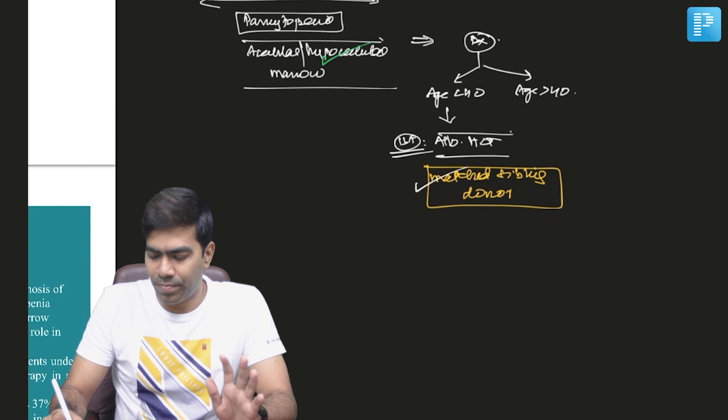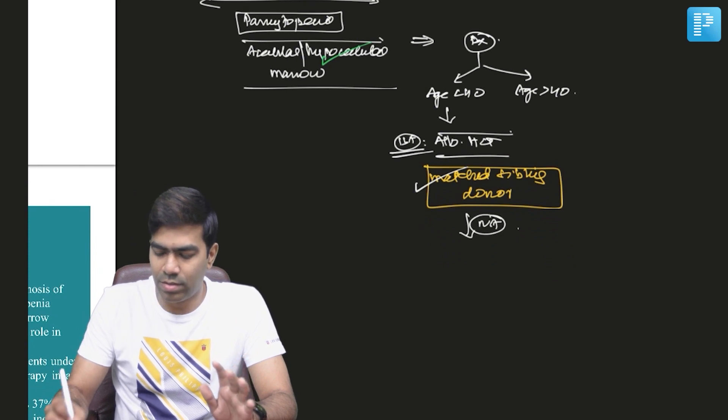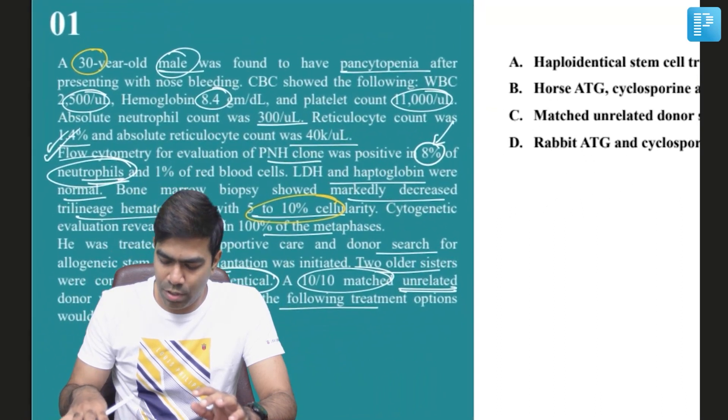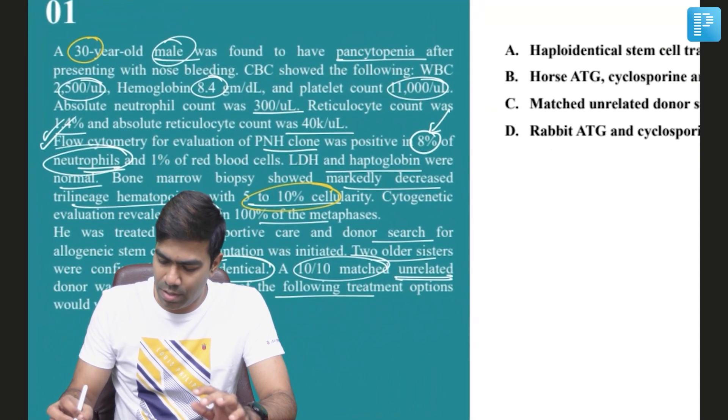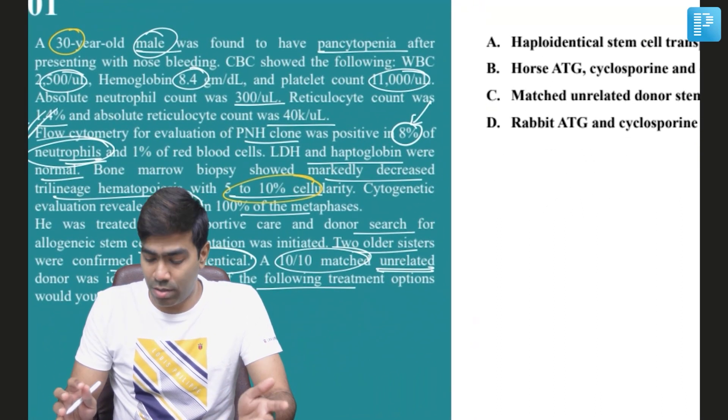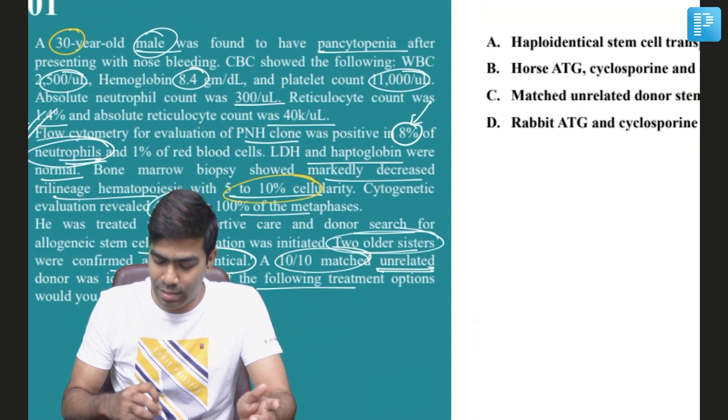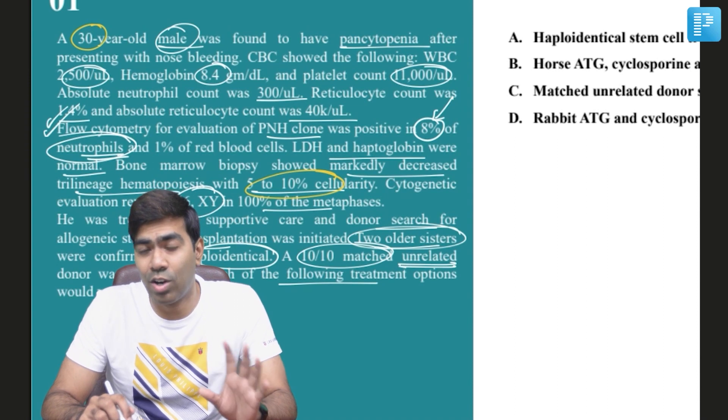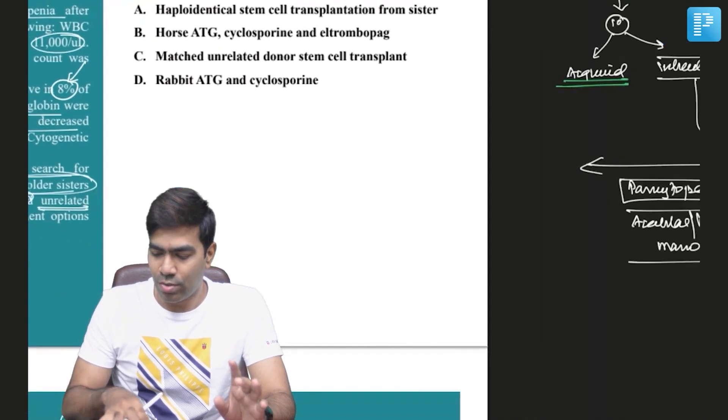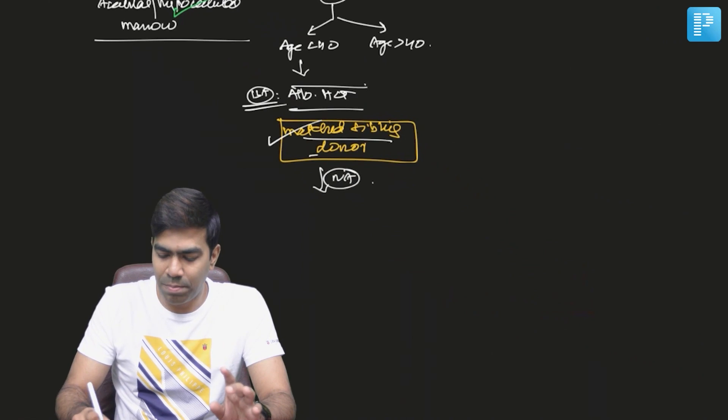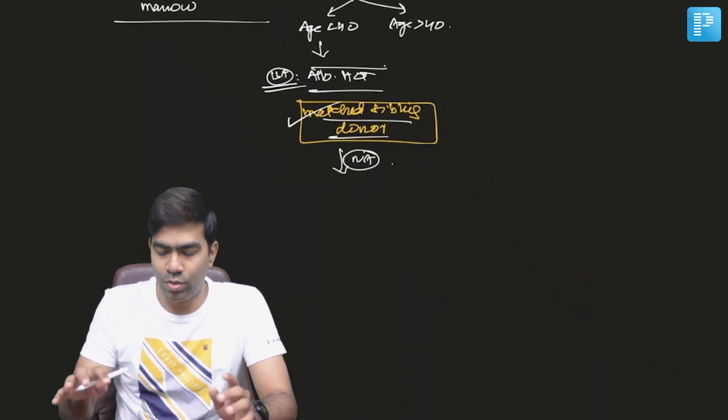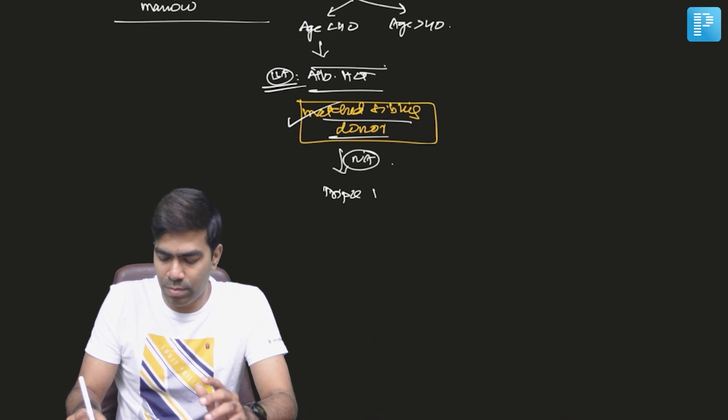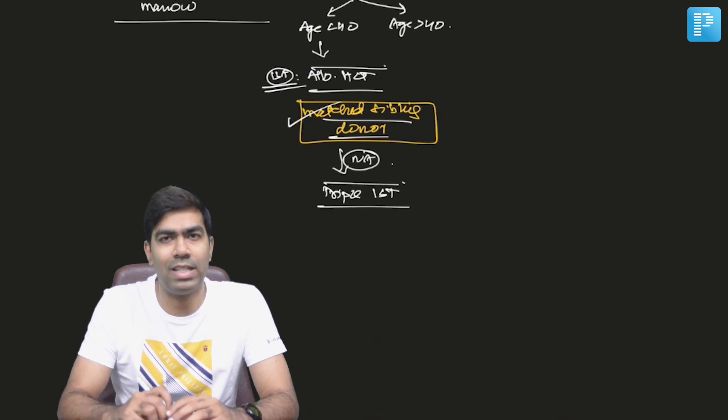allogeneic hematopoietic stem cell transplantation. If it is not available, so let us look at this example. In this example, you have a relative donor who's a relative. Two older sisters are there but they are only haploidentical, which means only half matched. They are not fully matched. So in this situation you are not having a matched sibling donor. So what you're going to do is you're going to go for triple immunosuppression, triple immunosuppressive therapy in these patients.